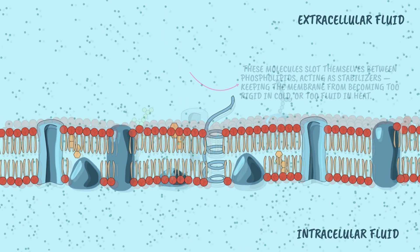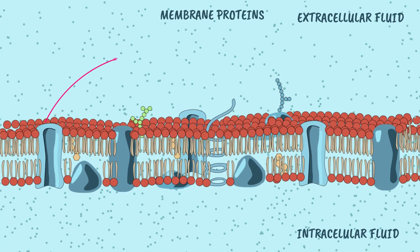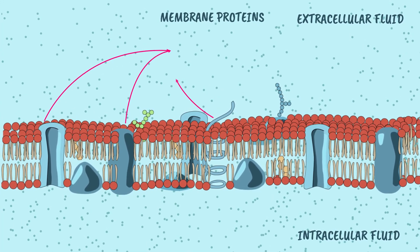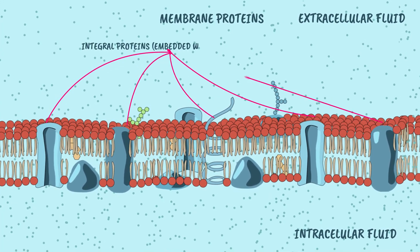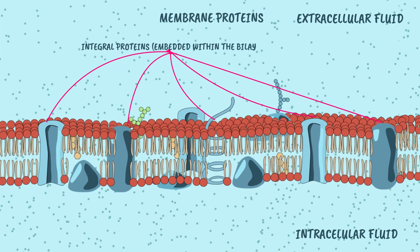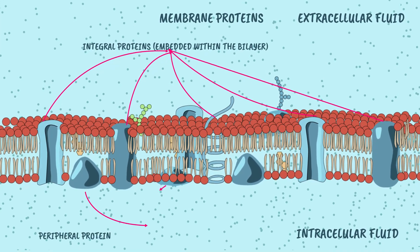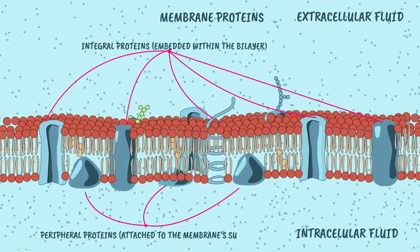Now, onto membrane proteins. They come in two main types: integral proteins, embedded within the bilayer, and peripheral proteins, attached to the membrane's surface.